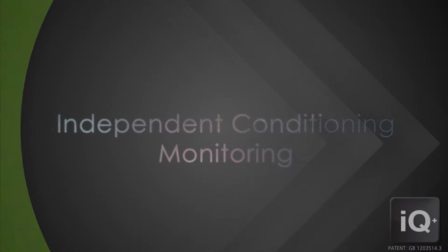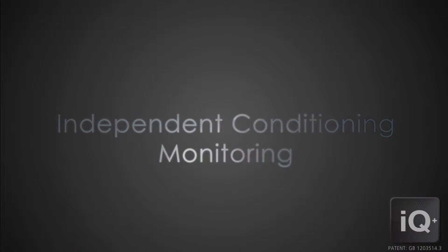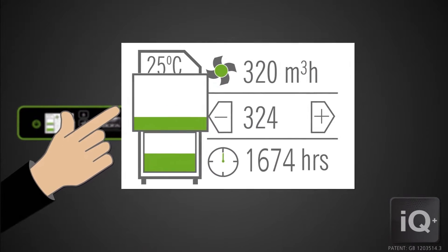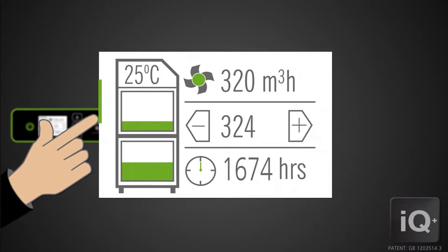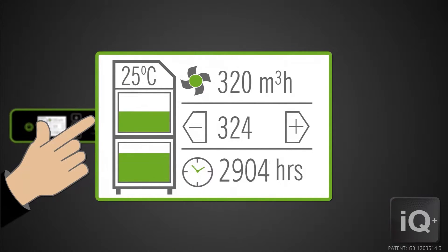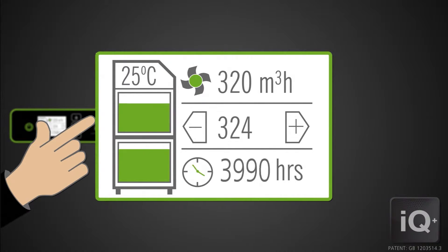Pre-filter and existing filter independent condition monitoring. On the display, a representative icon of each filter is displayed. Each icon fills in parallel to show filter status with the relevant filter as gradual blockage occurs.